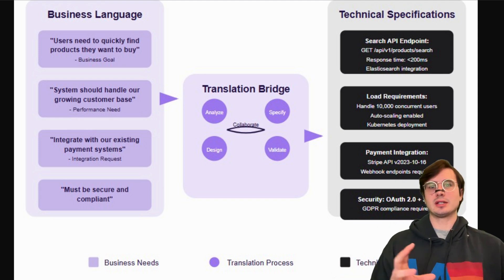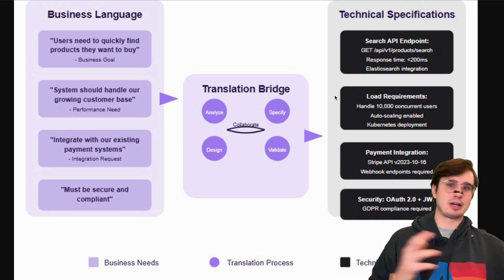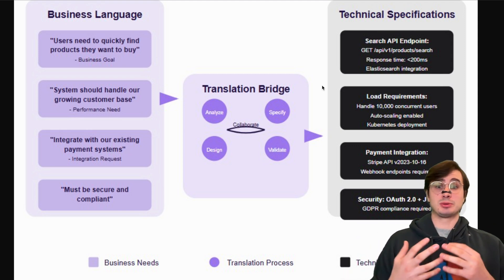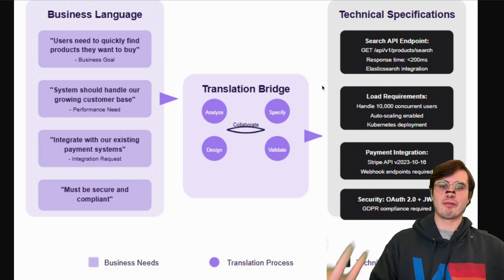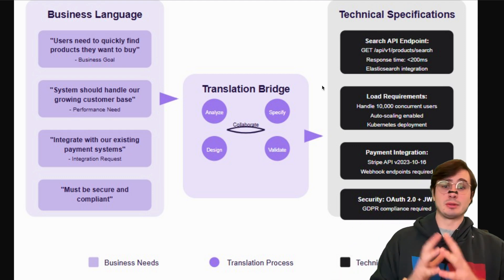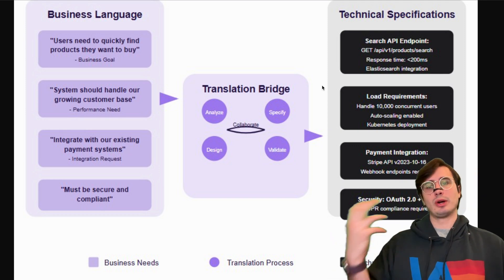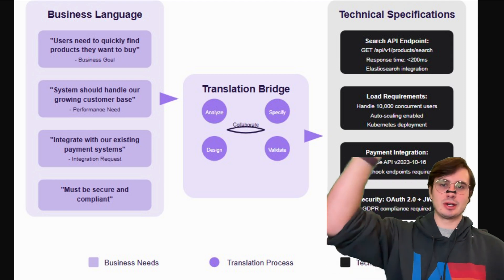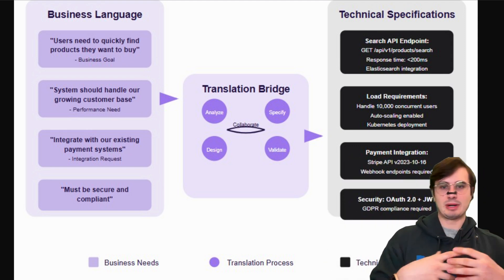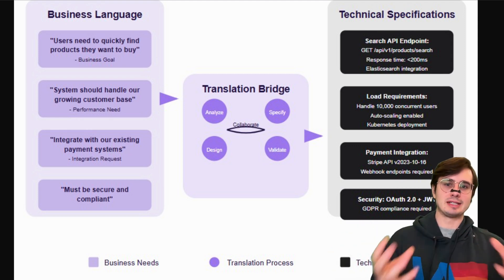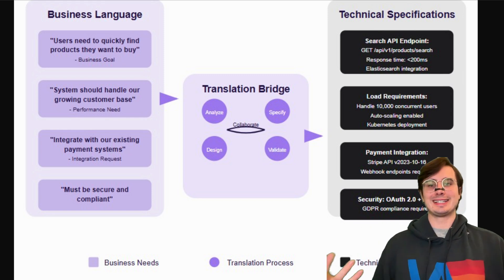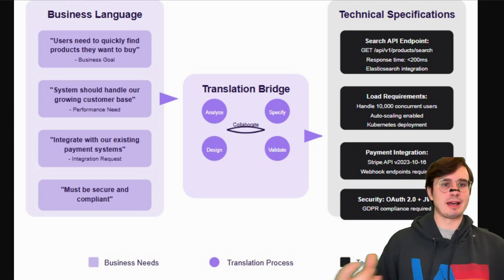In step three, take all the requirements gathered in the previous steps and start translating them into technical specifications. Do source-to-target mapping — understanding what data is coming from where and how it's going to change. Set data contract and schema specifications, set orchestration plans including batch schedule, trigger logic, and platform. Also set a success criteria, like: we'll deem this pipeline successful when a specific dashboard updates daily with correct information. Create flow diagrams that are easy to understand for non-technical users, so they can see all business requirements are being met even if they don't understand exactly how.